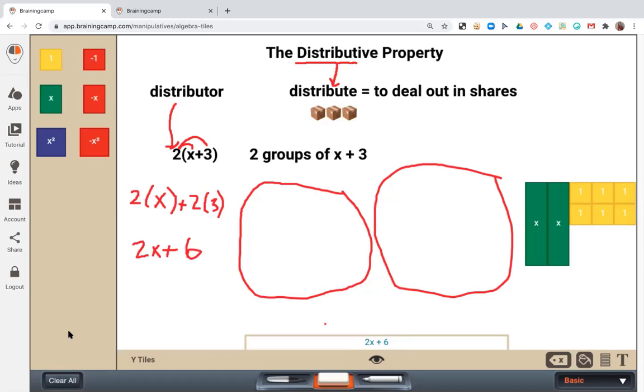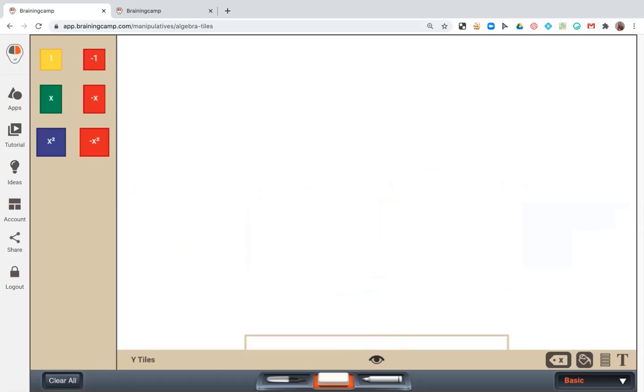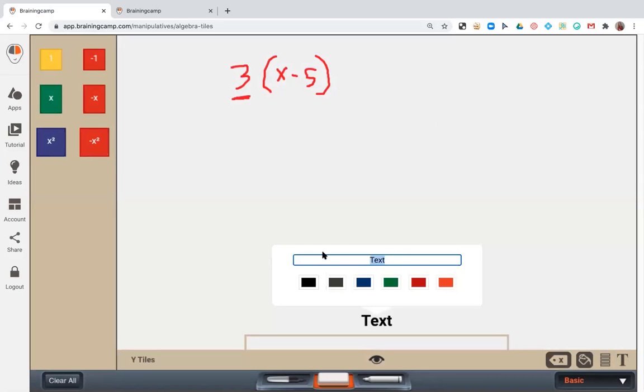So now I'm going to just do one more example of what this looks like. So what if we have 3 times x minus 5? So remember this guy, he's the distributor. He tells you how many we need. He's telling us that we need 3 groups of x minus 5.